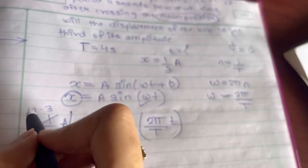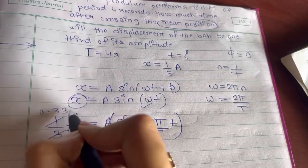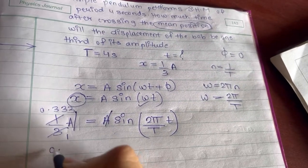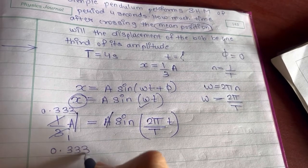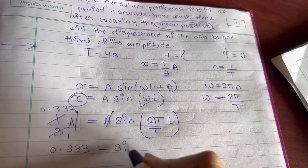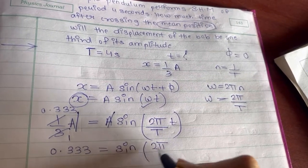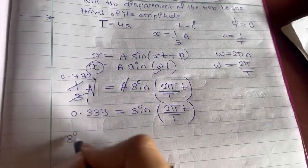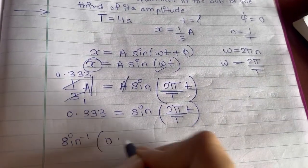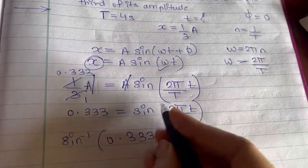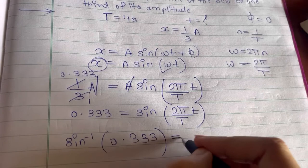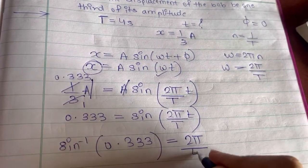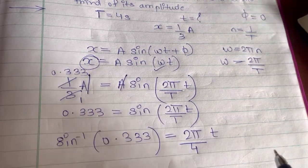Now if you take this sine on left hand side, that becomes sin inverse of 0.333 which is equal to 2 pi upon capital T. The value of capital T is 4, and the small t is left over here.